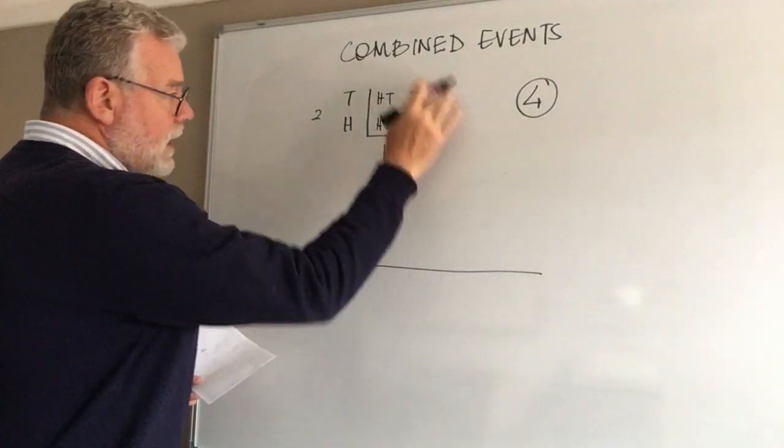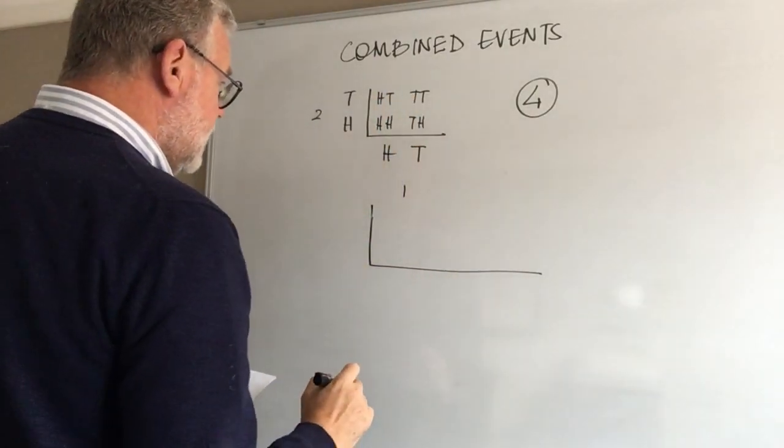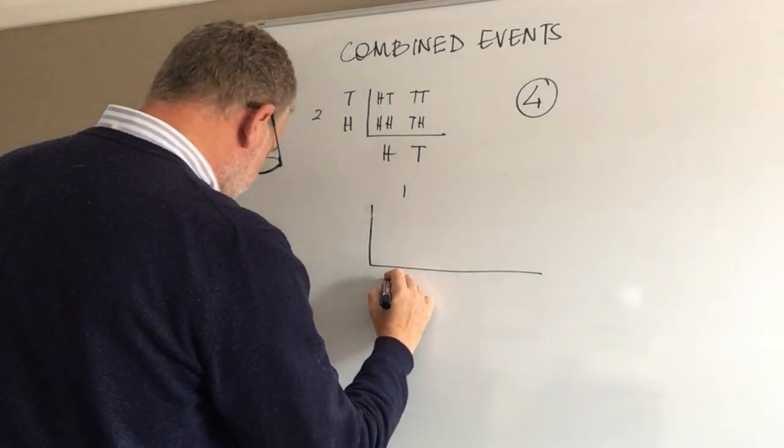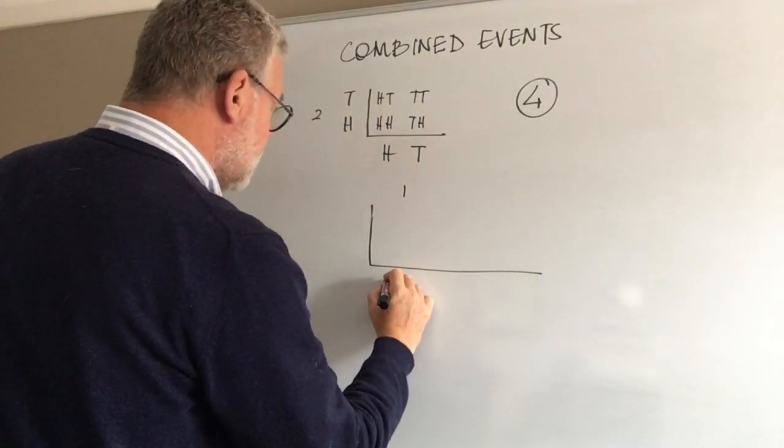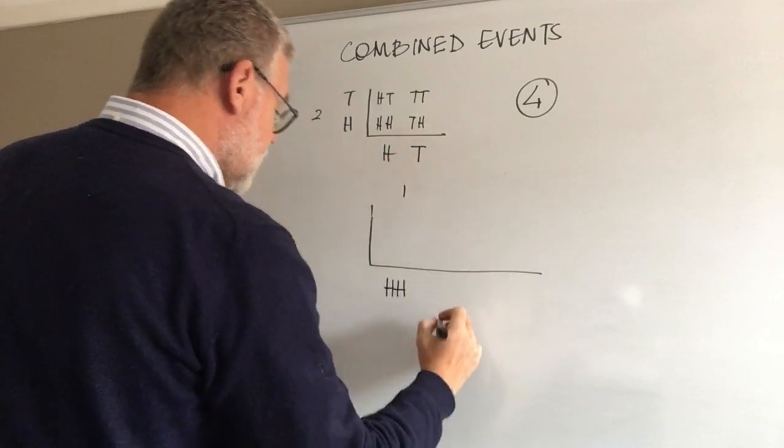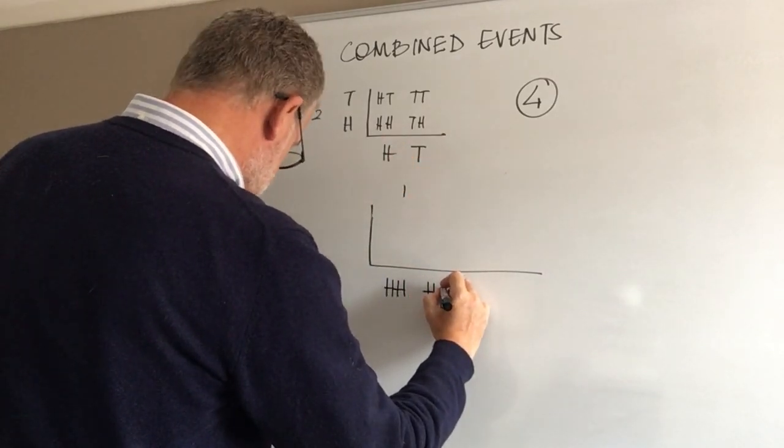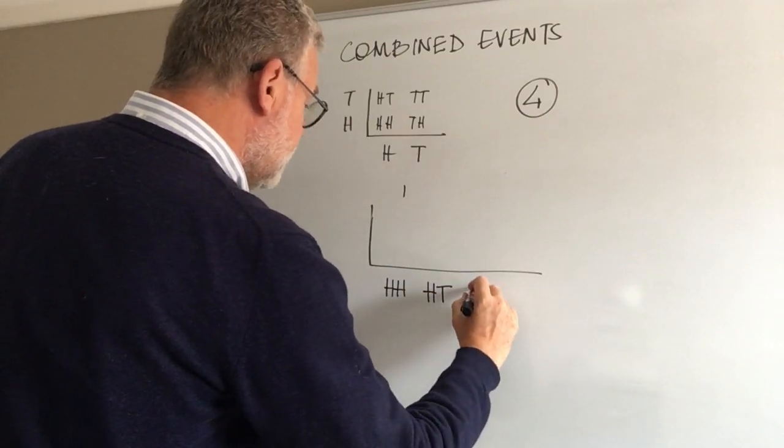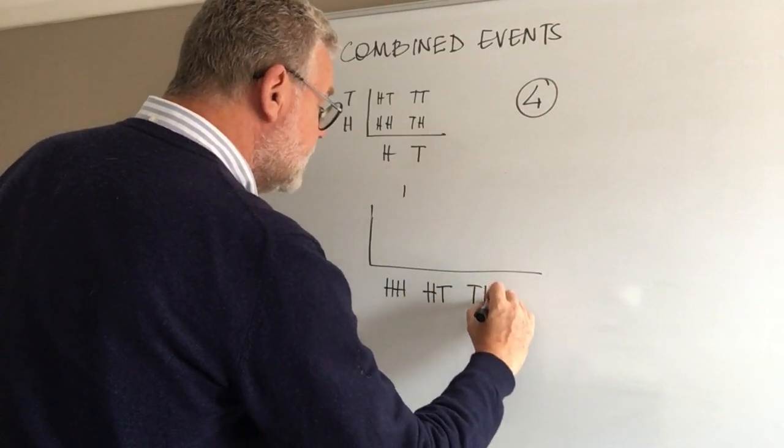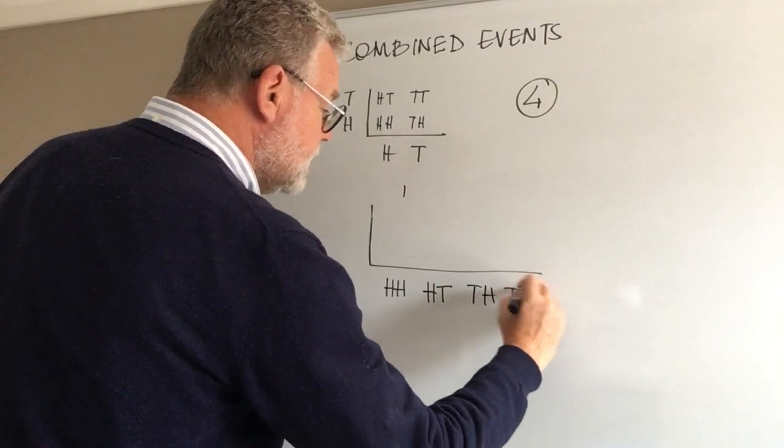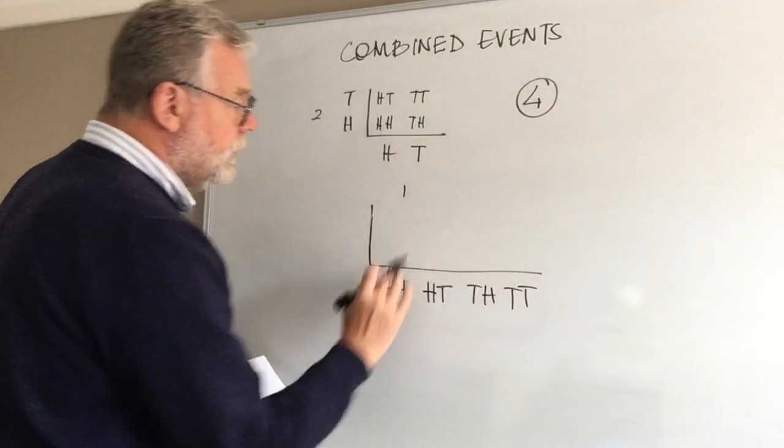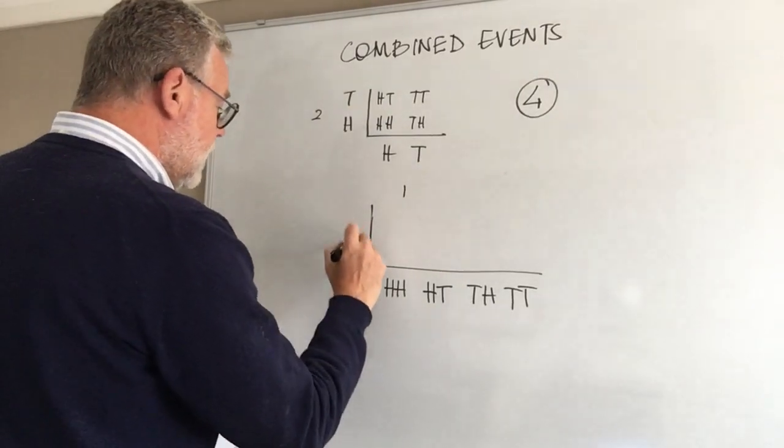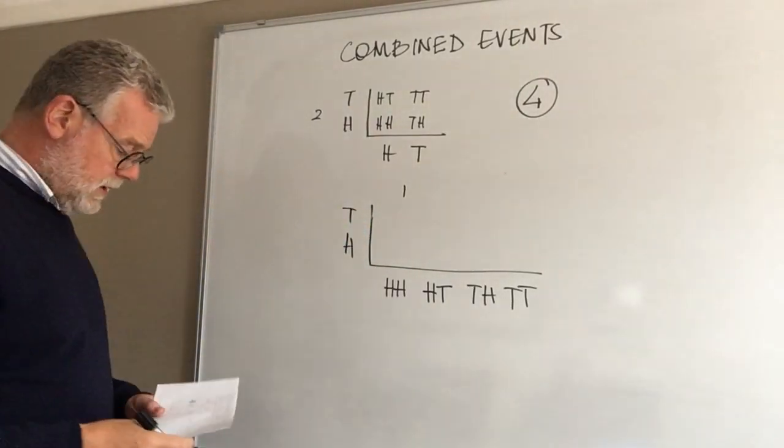I'll take that information and say, what have we got here that's going to help us? We could have head and head, head and tail, tail and head, or tail and tail. That's what we discovered when we use two coins. Now we're adding a third coin in, so we've got those two options again.